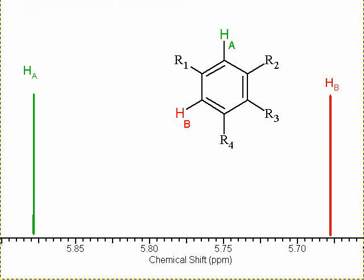This is the spectrum without coupling. The red hydrogen is at a slightly lower chemical shift than the green one. I've just put in some markers here to indicate the original shift of these protons.